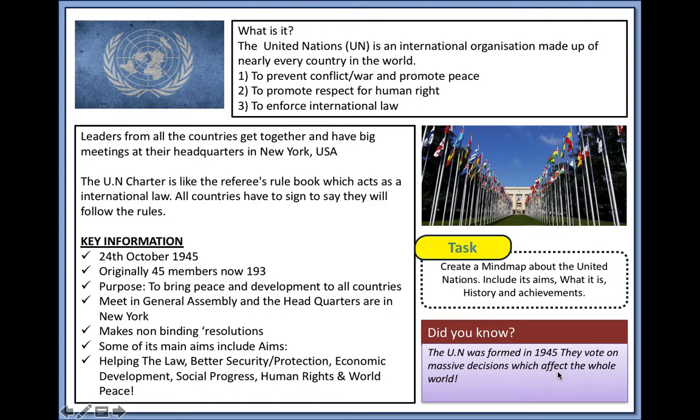Those five permanent members also have the power of veto, so they can say no to any action the United Nations would want to take. The Security Council also has ten non-permanent members, which change every few years after their term is up, drawn from countries all around the world — a certain number from each continent — making 15 members in total.